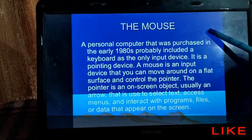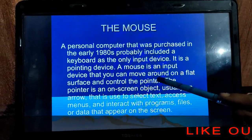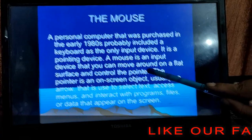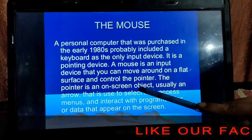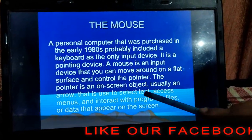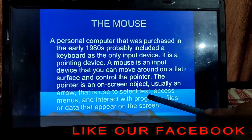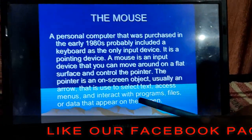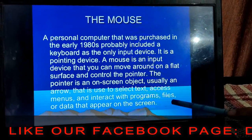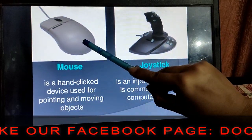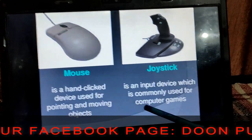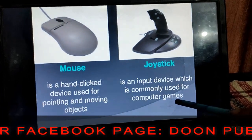Next is the mouse. Mouse is an input device that can move around on a flat surface and controls the pointer. It is used to select text, access menus, and interact with programs or files. Next is the joystick, which is used to play computer games.